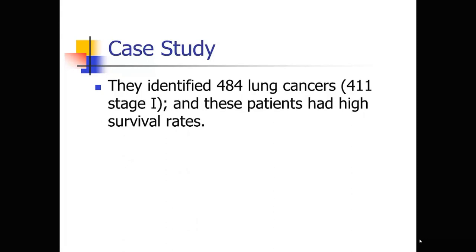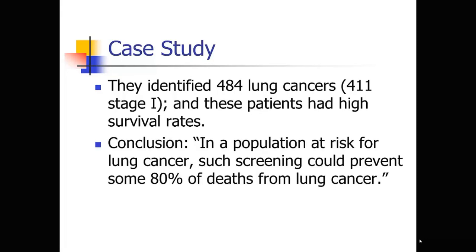A paper came out in the New England Journal of Medicine in 2006 which seemed to show at first pass that CT scanning was indeed effective. Researchers screened more than 30,000 smokers and other high-risk people annually with CT scans to identify early stage lung cancers. Out of those more than 30,000 people, they identified 484 lung cancers, most of them in stage one, which is very atypical. These patients were treated and had very high survival rates in the 88% to 90% range. They concluded that CT scanning was effective and that such screening could prevent some 80% of deaths from lung cancer — which was really an over-extrapolation from the data.